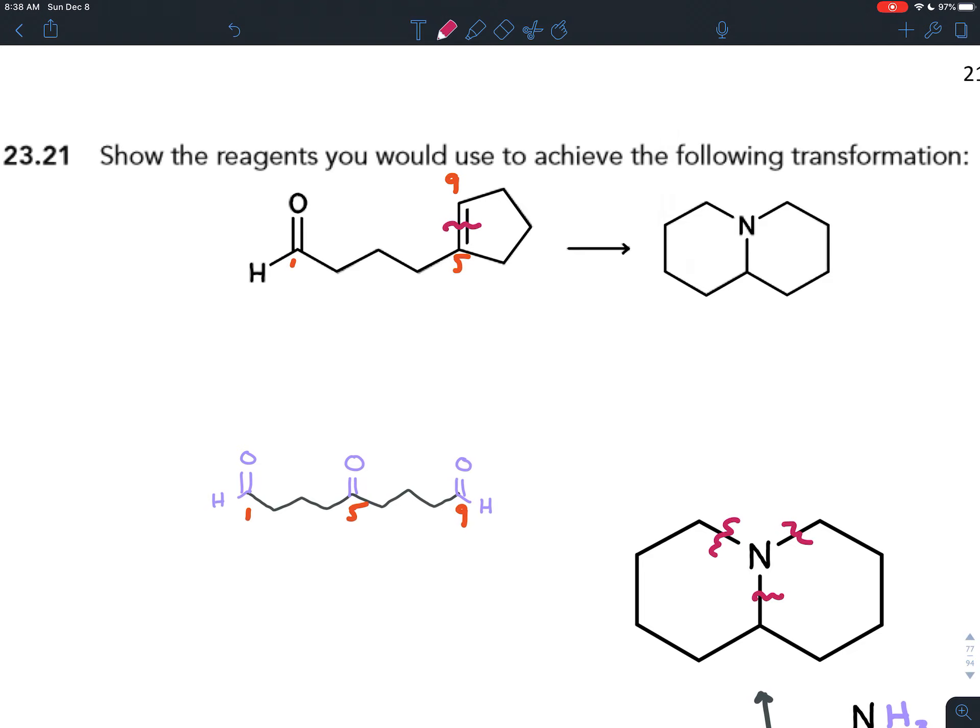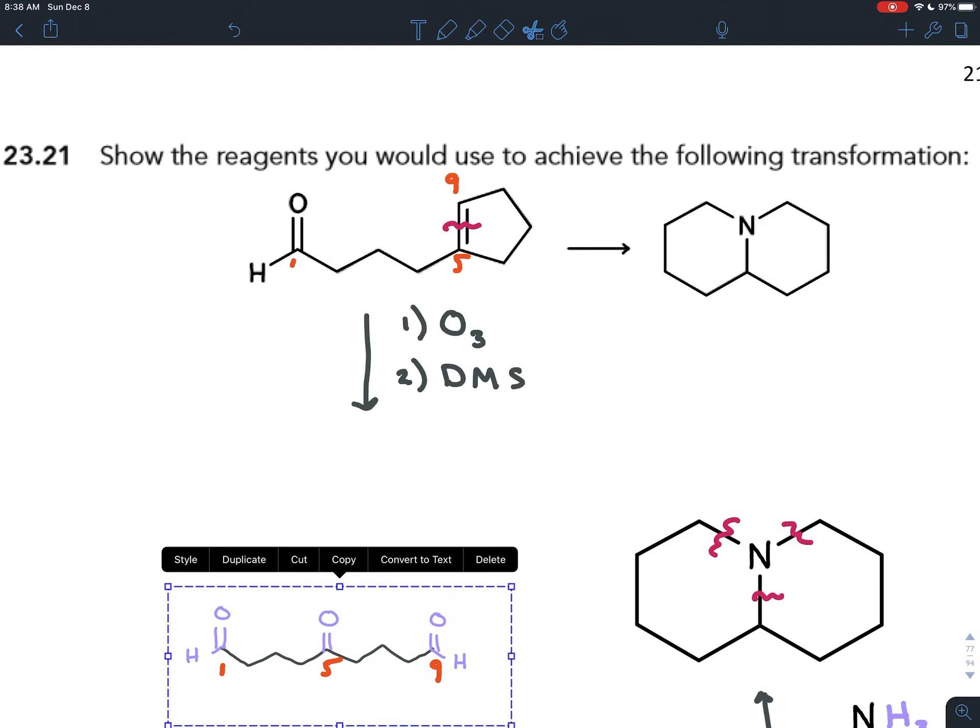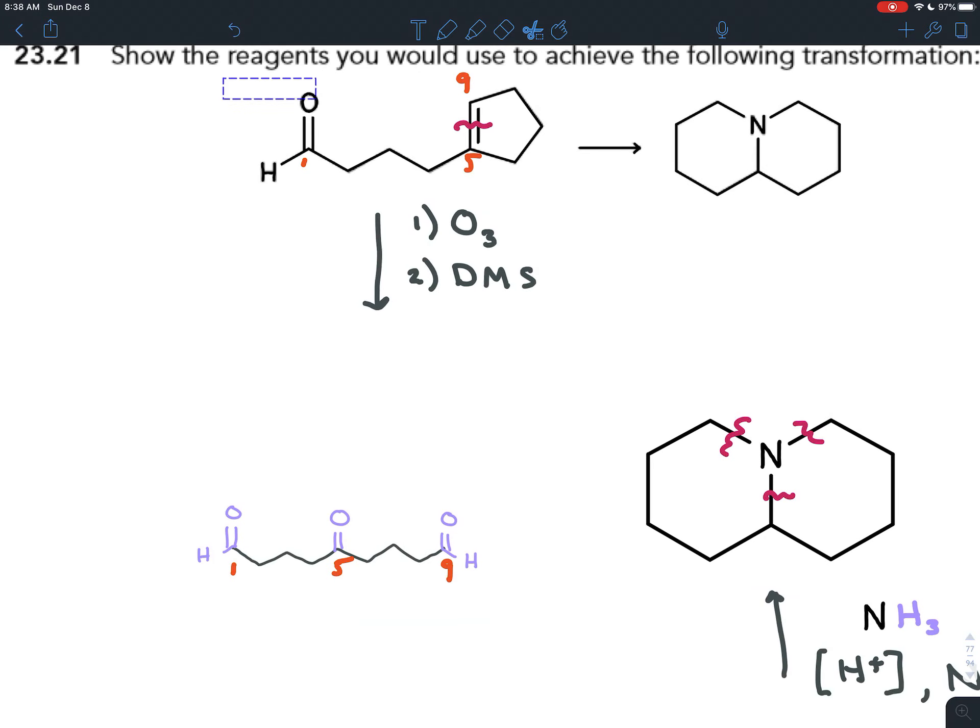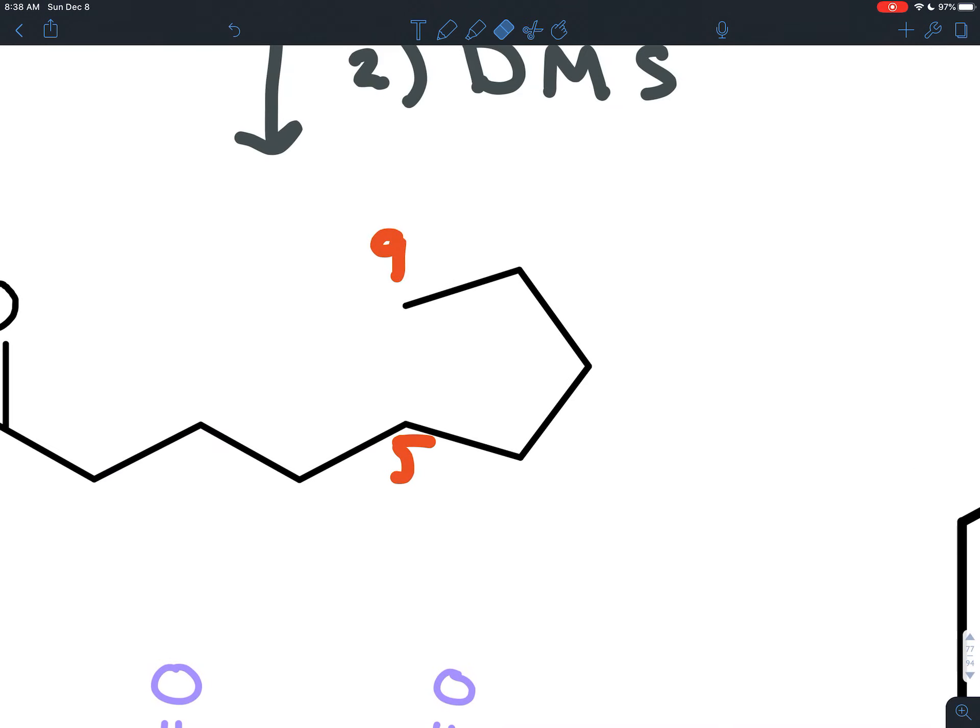The way to do that is with ozonolysis. If you do ozonolysis on an alkene, and that's bubbling ozone O3 gas, and you follow that up with dimethyl sulfide DMS, it breaks the bond between the alkene, the double bond between the carbons, and in its place you have a carbonyl.